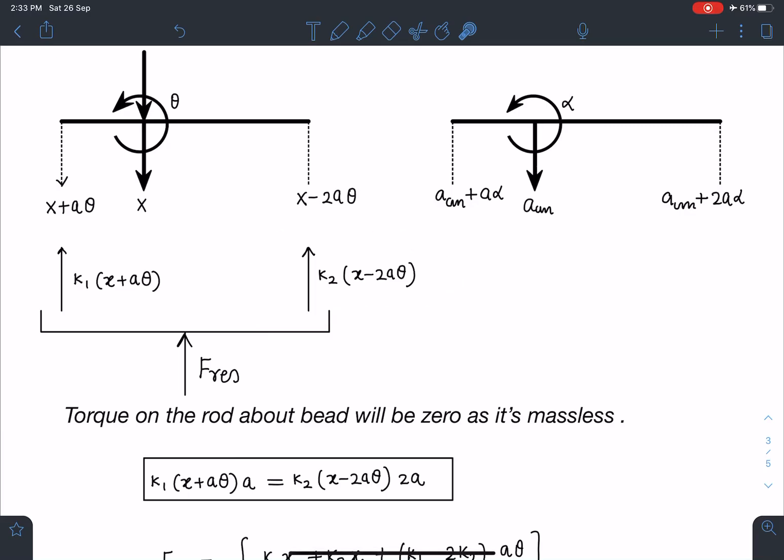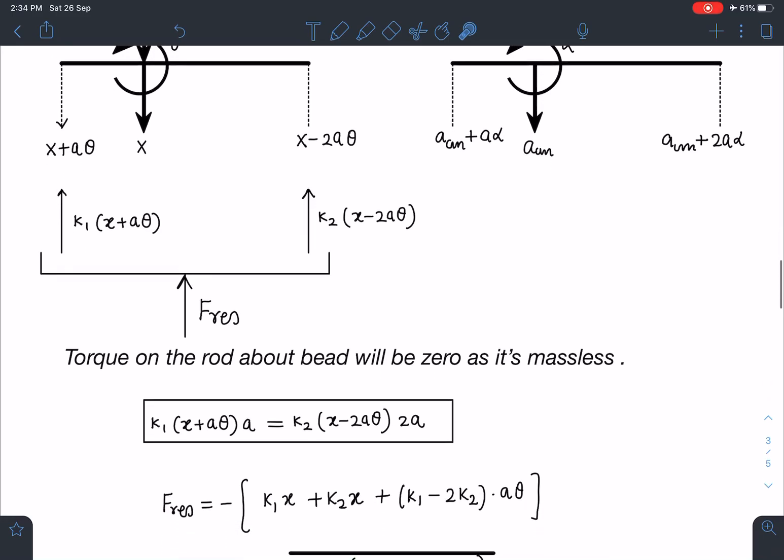So torque provided by this force and the torque provided by this force must be equal. They should cancel each other. So I am going to get another equation here, and that is k₁(x + a·theta) times a, and that should be equal to k₂(x - 2a·theta) times 2a. We are talking about small oscillations only, so these angles, x, everything is very small.